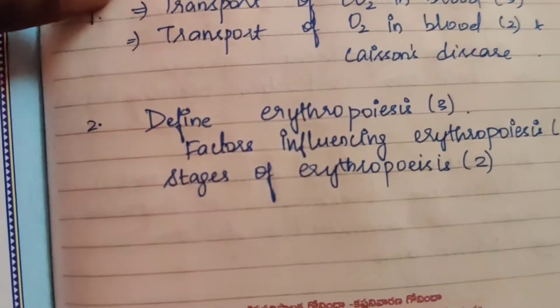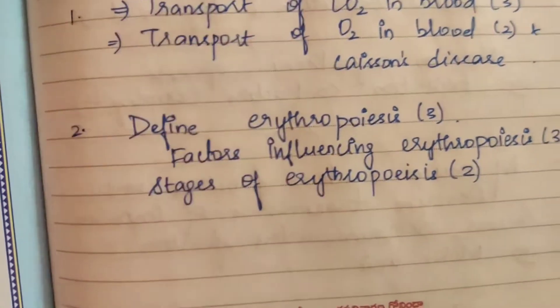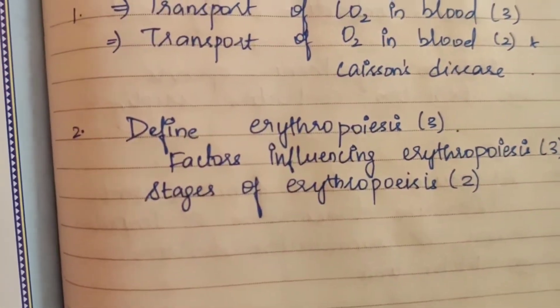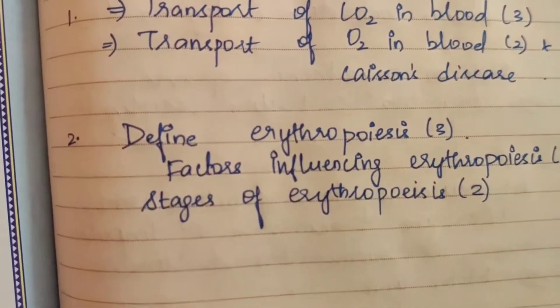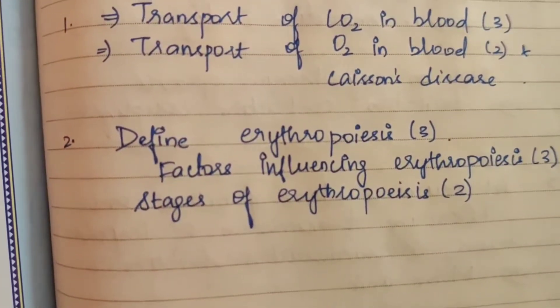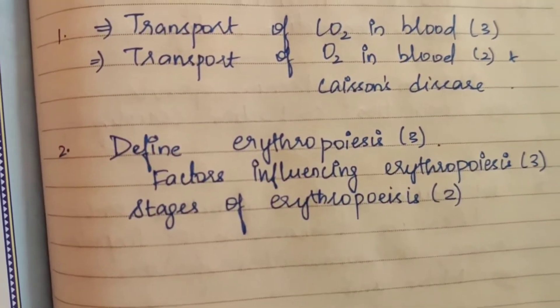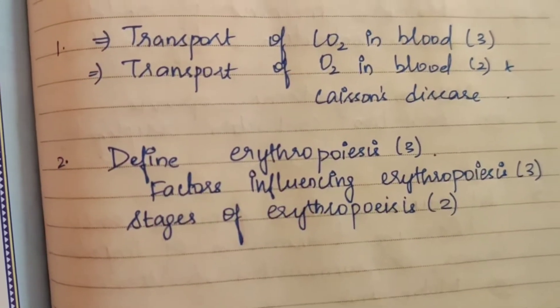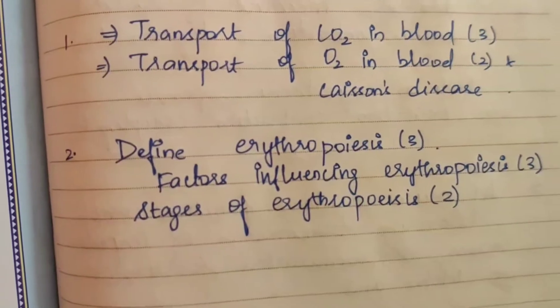Second question: Define erythropoiesis. Erythropoiesis has been asked three times. Factors influencing erythropoiesis — three times. Stages of erythropoiesis — two times. This is a 15-mark question.